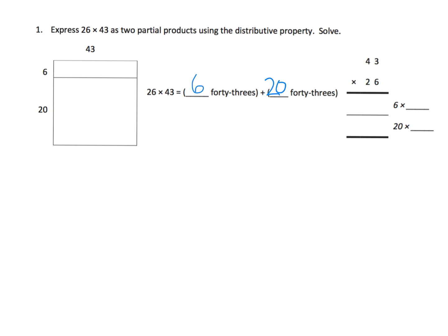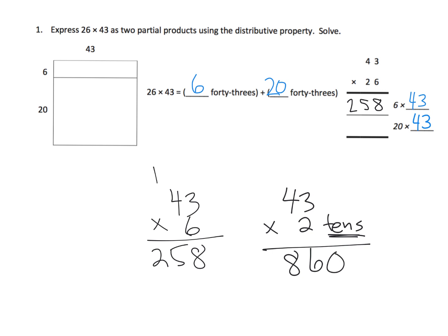So when we think of that, it's going to be 6 times 43. So down here on scratch paper we're going to do 6 times 43, and so that's going to be 258. And then we have 20 times 43. And so the way I like to think of it is 43 times 2, as in 2 tens. So that means we could just simply multiply by 2. So 2 times 3 is 6, 2 times 4 is 8. And that's 86 tens, which translates to 860. So 20 times 43 is 860. And when we add those two partial products we get 1,118.